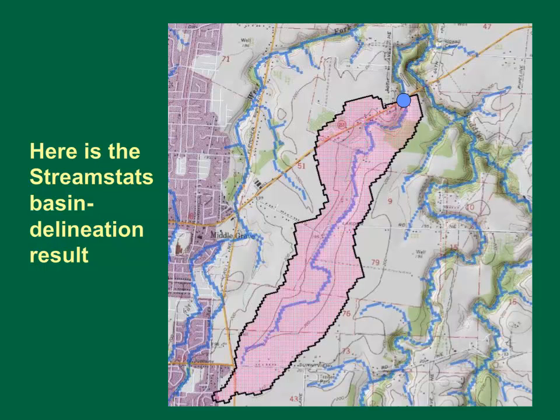This figure is our basin for the tributary to Little Pudding River as it was delineated on the USGS StreamStats application for Oregon. The basin divide, or watershed, is the black line. The pink area is the drainage area. The data within StreamStats is more detailed than was shown on the previous map. In this case, we can see the watershed divide falls between visible contours, but is not halfway between them.